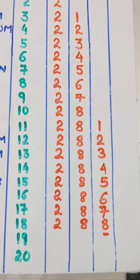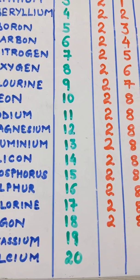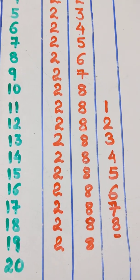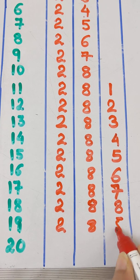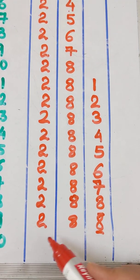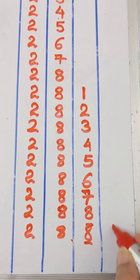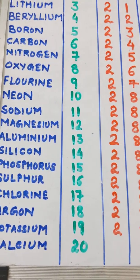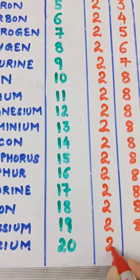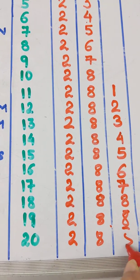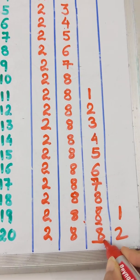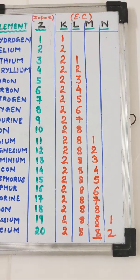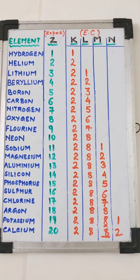With argon, the M shell is complete. For potassium, atomic number 19, we cannot write 2, 8, 9 — we cannot have more than 8 electrons in the outermost shell. Therefore, we write its configuration as 2, 8, 8, 1, with 1 electron in the N shell. Similarly for calcium, the configuration is 2, 8, 8, 2 — we can never write it as 2, 8, 10. This completes the electronic configuration of the first 20 elements.